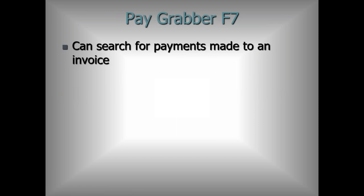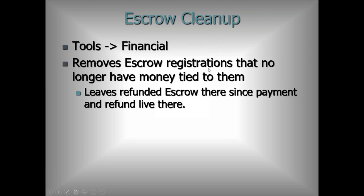On the F7 keyboard shortcut Pay Grabber, it now has a search field for payments made to an invoice number. It already had the receipt number field, so you can put in an invoice number to show the invoices, and I've created a separate field to see the payments made to those invoices.